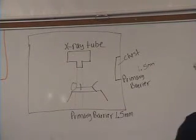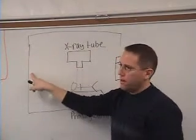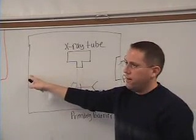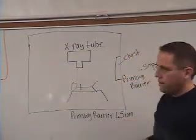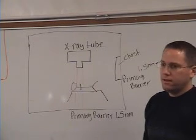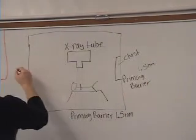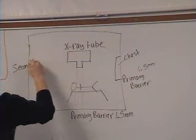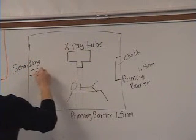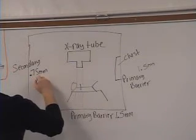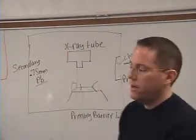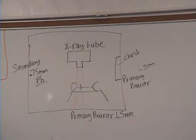All right, the other wall, if it's not a primary barrier, what would you call it? Secondary. So this is a secondary barrier. It only has to have half the amount of lead. So how much would that be? 0.75. So this is a secondary barrier. And it's only 0.75 millimeters of lead. PB stands for lead. MM is millimeters and PB is lead. So if you want to make sure you know that picture well, you'd probably see that picture again on a test.